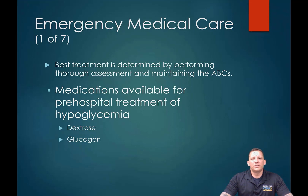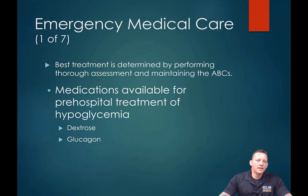As an AEMT, you're able to use IV or IO access to deliver glucose or dextrose — dextrose if it's through IV or IO, glucose if it's oral. This is based on whether somebody is able to follow commands and protect their own airway. We also have the ability to give glucagon, but remember: one contraindication for glucagon is the inability to restore blood glucose levels if you ask the liver to dump the last of its glucose.